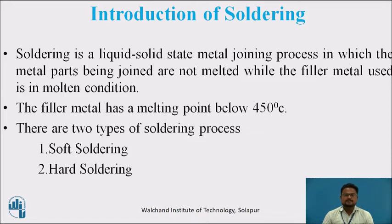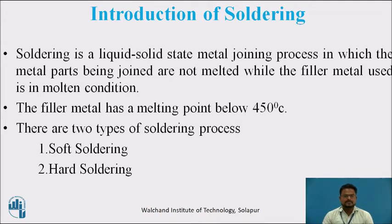There are two different types of soldering: soft soldering and hard soldering. Soft soldering is the method which uses tin-lead antimony and tin-lead alloys. Hard soldering is the process that uses soldering alloys containing silver.